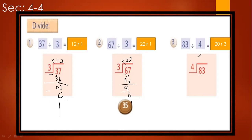Now, 83 divided by 4: 8 divided by 4 equals 2; 2 multiplied by 4 equals 8; subtract. Bring down the 3: 3 divided by 4 equals 0. The quotient equals 20 and the remainder equals 3.